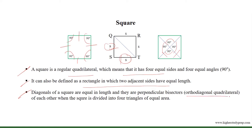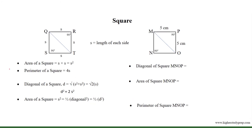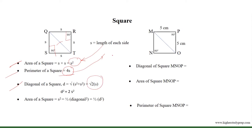A square is also called an orthodiagonal quadrilateral because when divided by its diagonals it forms four triangles of equal area. The area of a square equals the square of the length of each side, the perimeter equals four times the length of each side, and the diagonal equals the square root of 2 multiplied by the length of each side.